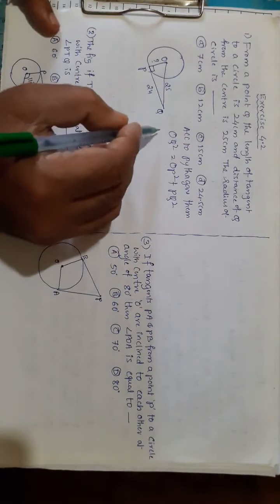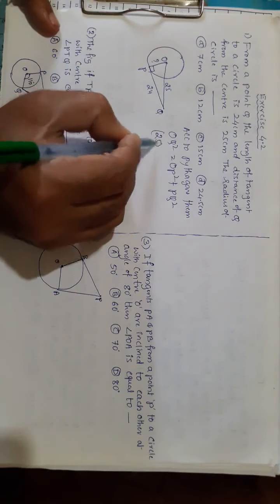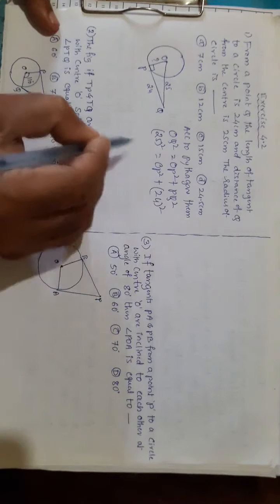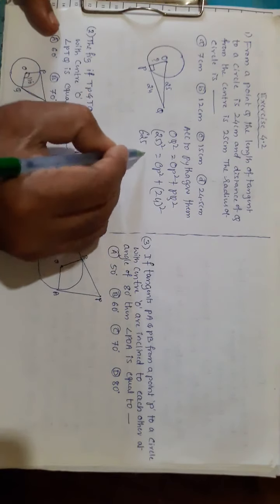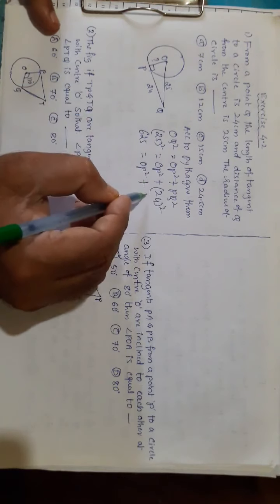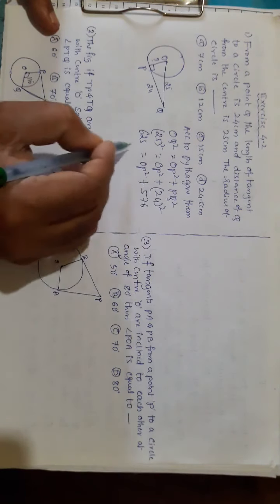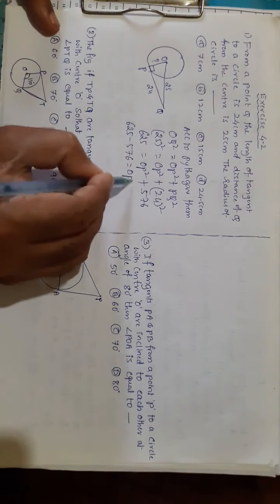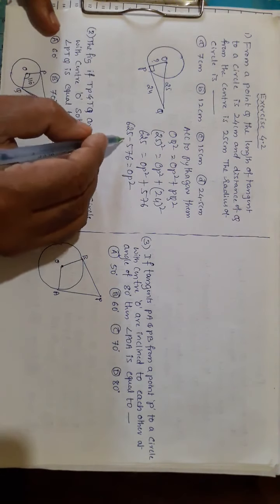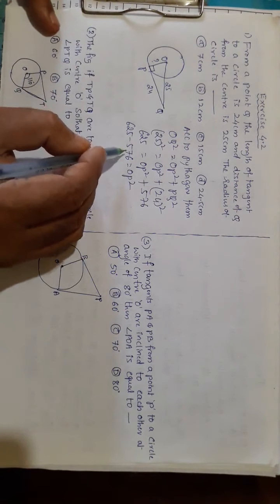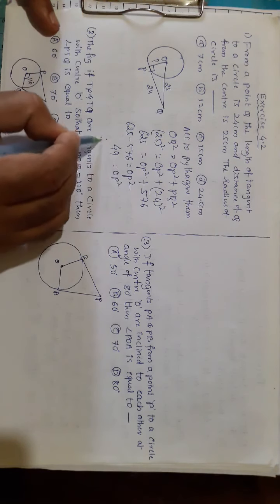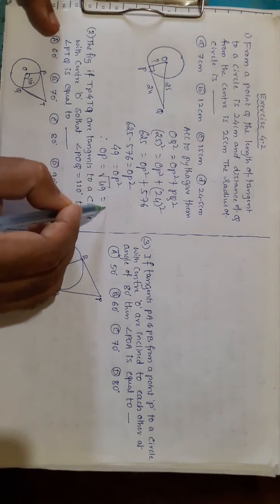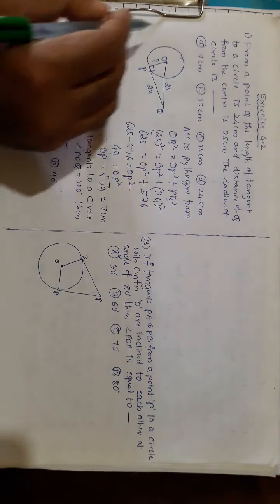Substituting: 25² equals OP² plus 24². That is 625 equals OP² plus 576. So OP² equals 625 minus 576 equals 49. Therefore OP equals the square root of 49 equals 7 centimeters. This is the correct option.